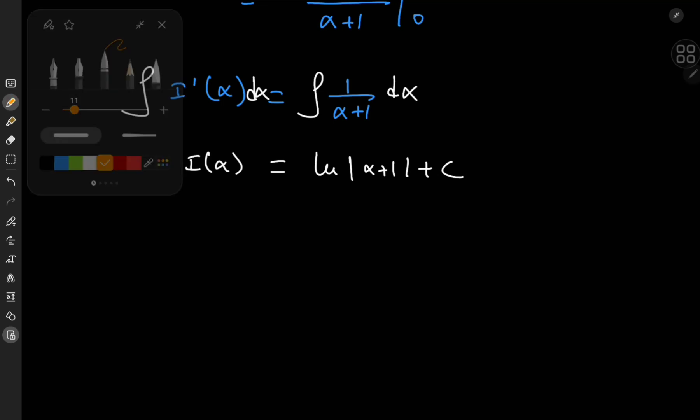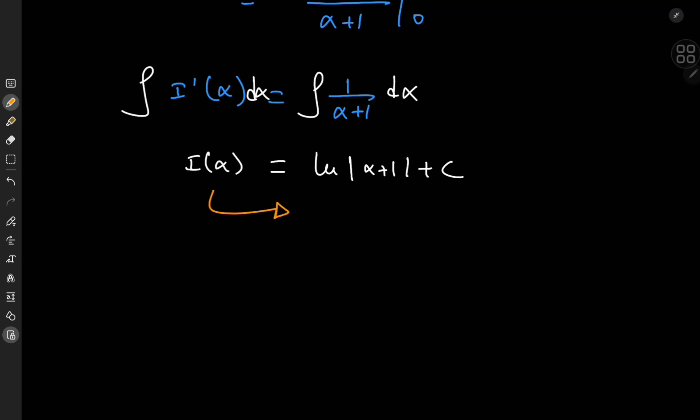And for that, recall that the integral function i of alpha is the integral from 0 to 1 of x to the alpha minus 1 divided by log x dx. So if I plug in alpha equal to 0, that would give me x to the 0, which is 1. So I have 1 minus 1 in the numerator, that means the entire thing collapses to a big bad 0, meaning that i of 0 is 0.